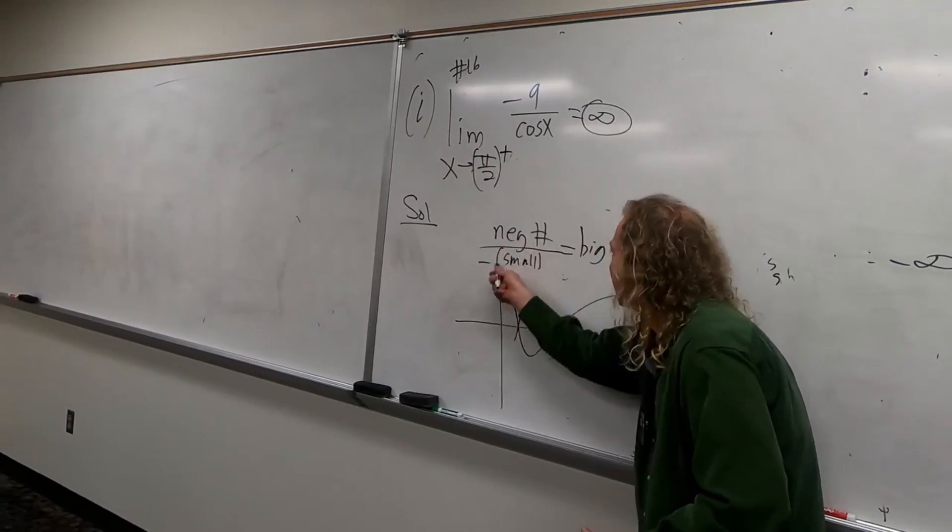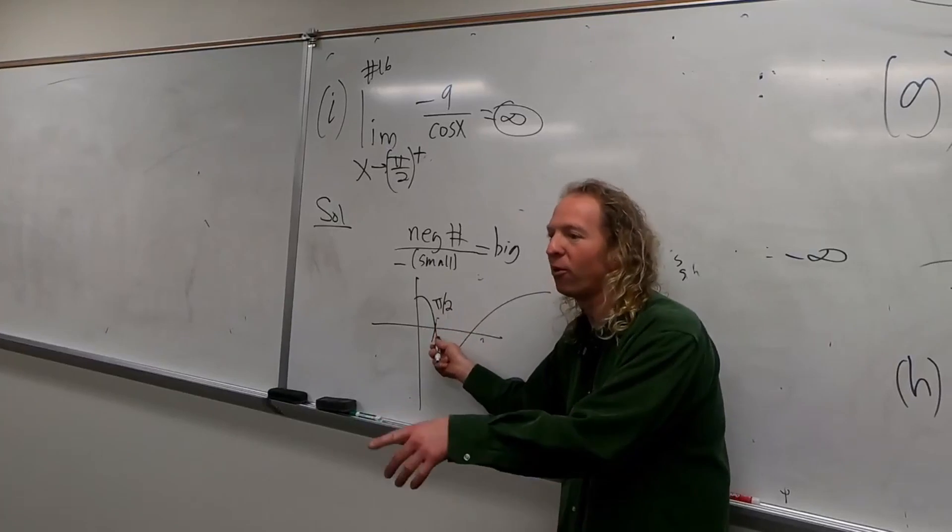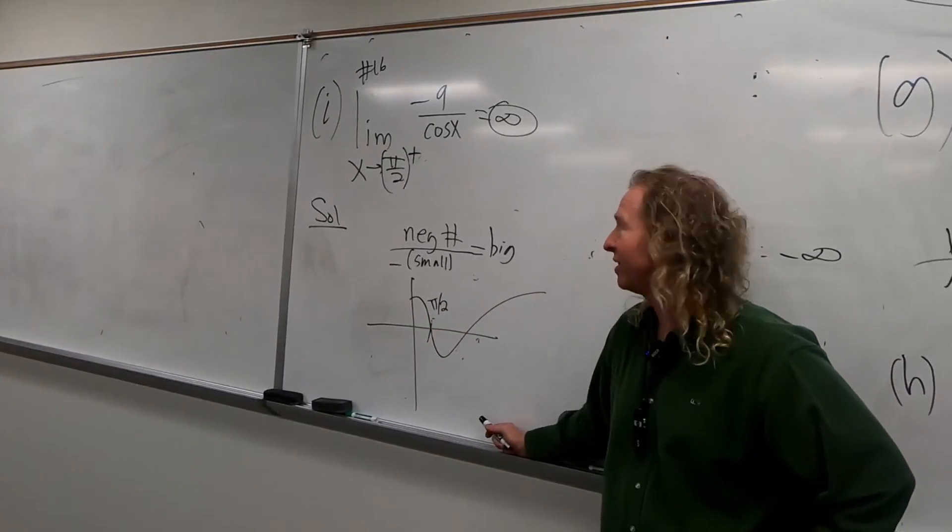And then, so it's negative and small. Negative, negative is positive, so it's big. If it was over here, it'd be positive. Right, yeah, right before, like Ethan was asking. It's tough, right? It's tough.